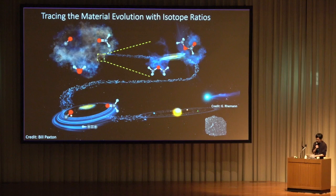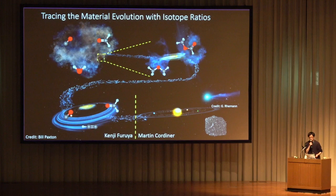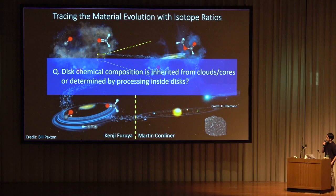In the first half of this talk, I will discuss isotope ratios from clouds to disks. In the second half, Martin will discuss isotope ratios in the solar system. The key question in my part is whether disk chemical composition is inherited from clouds or is determined inside disks.